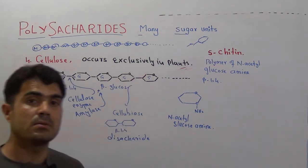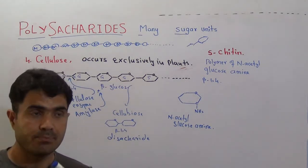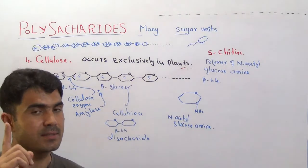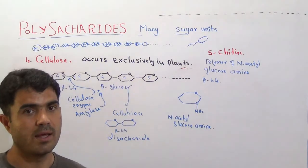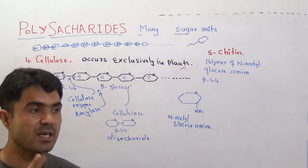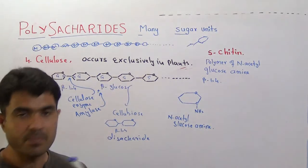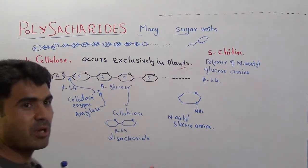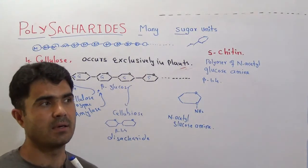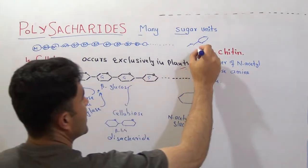Cellulose is exclusively present in plants — it is the asset of the plant. There are so many plants in the world, every plant contains cells, every cell contains a cell wall, and every cell wall contains cellulose. That is why cellulose is the most abundant carbohydrate on Earth. Examples of cellulose include paper and cell walls.